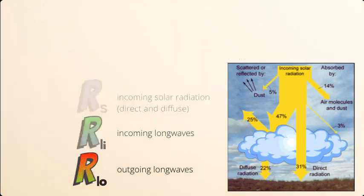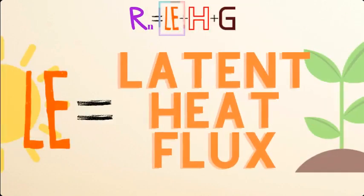Now let's look at the right-hand side of the equation — the fluxes — starting with LE, the latent heat flux. Latent heat flux is the energy that is absorbed by the water at the Earth's surface during evaporation or transpiration, apart from any change in the temperature. This is a flux or transfer of energy because we assume the resulting water vapor is transported away from the surface by either diffusion or advection.